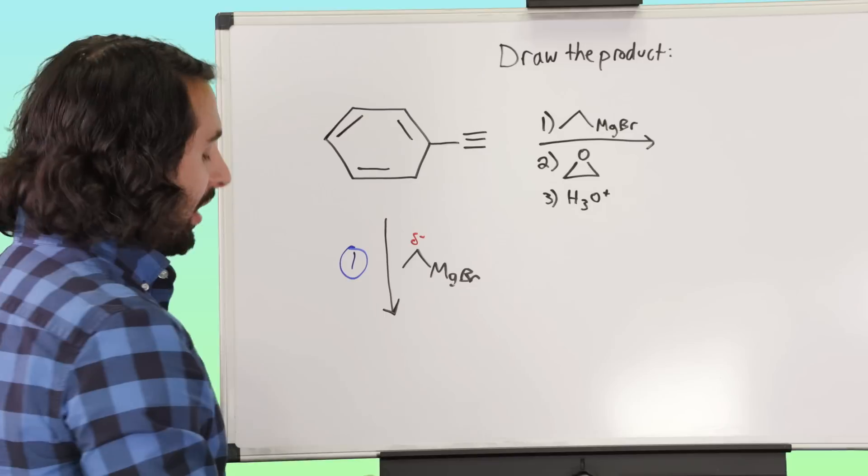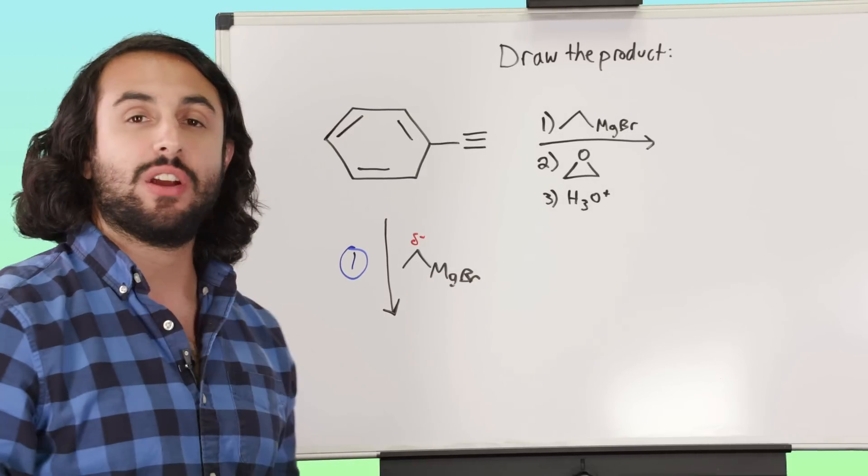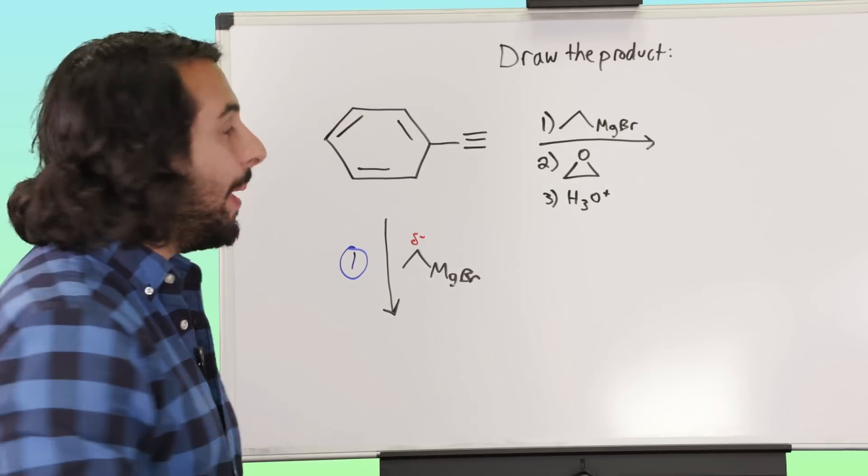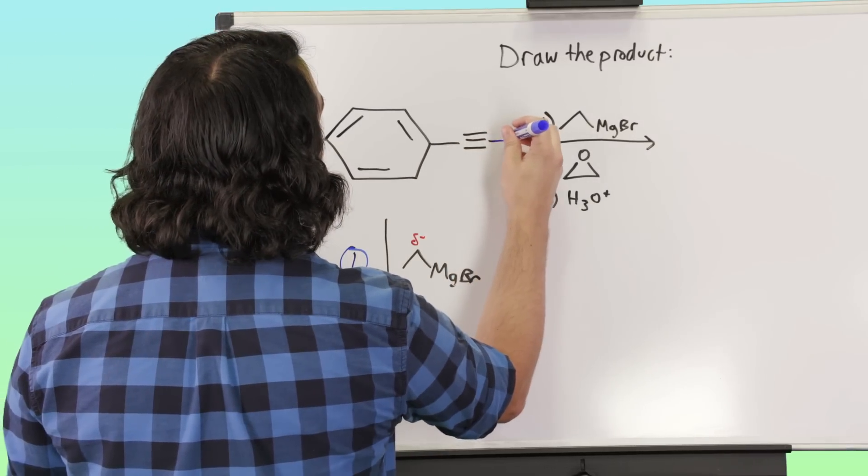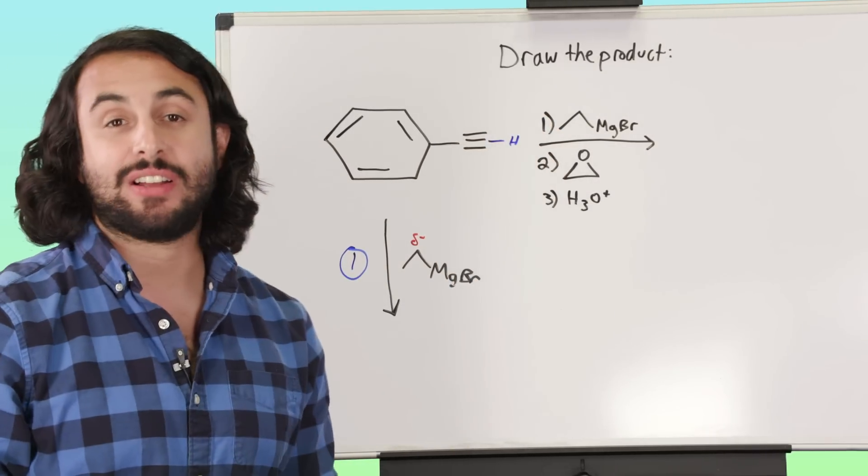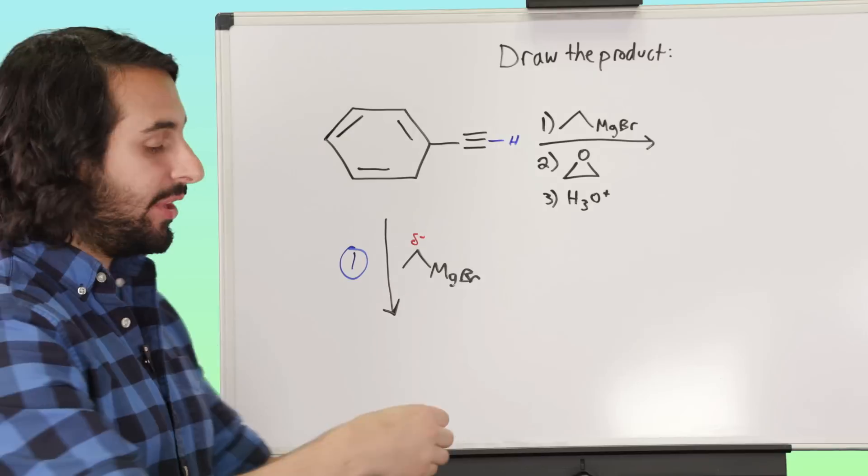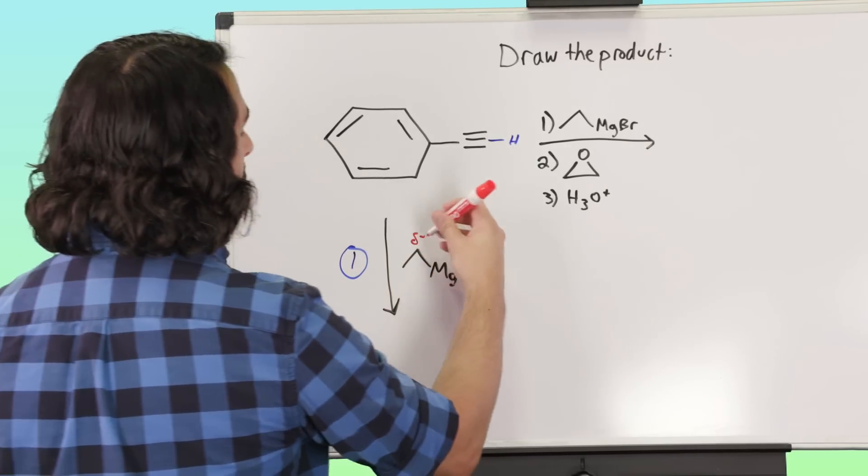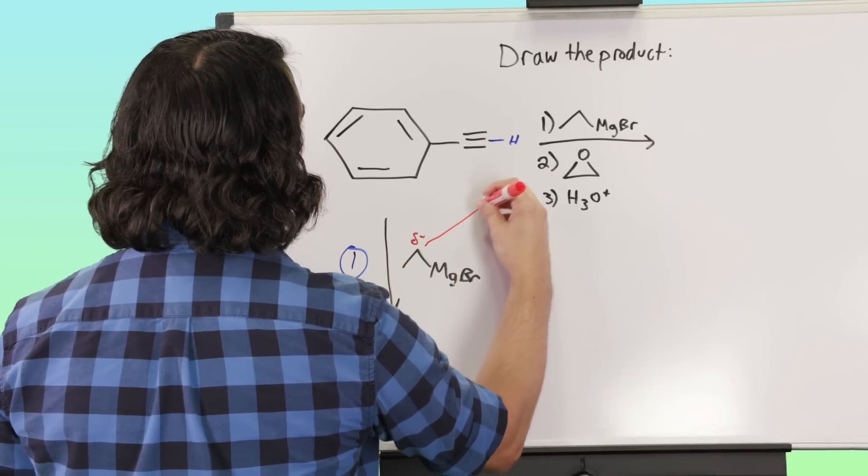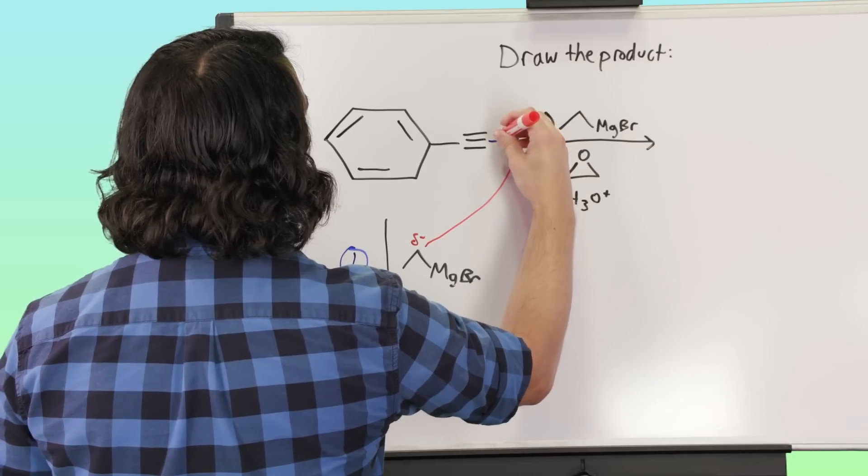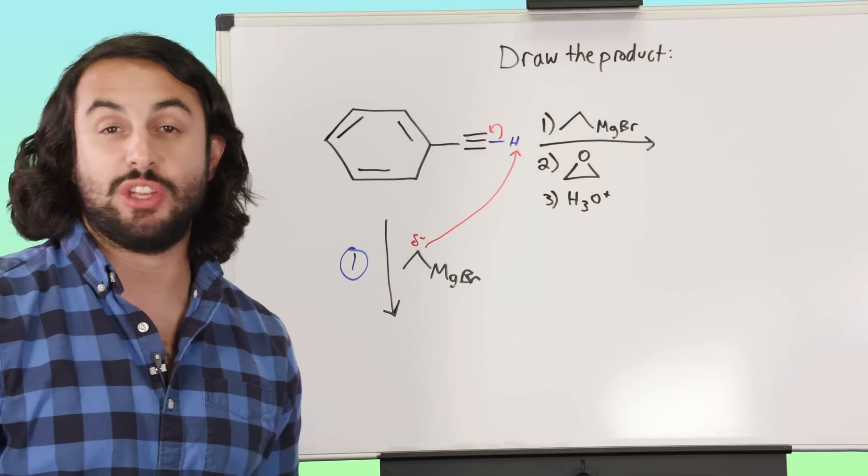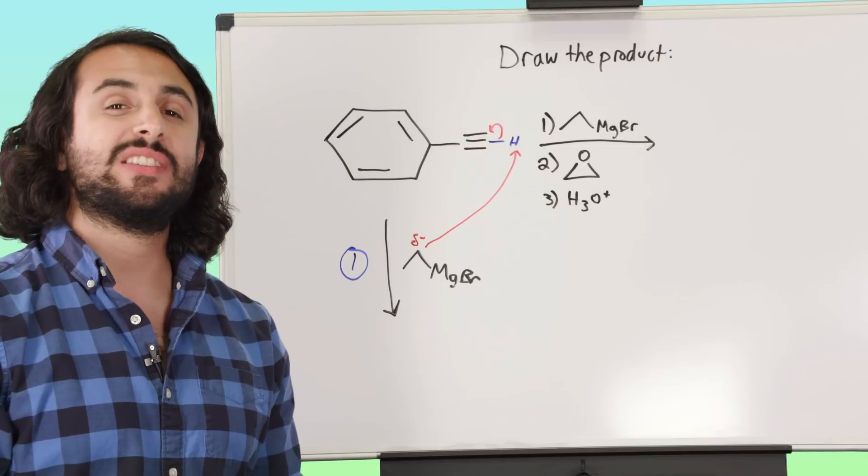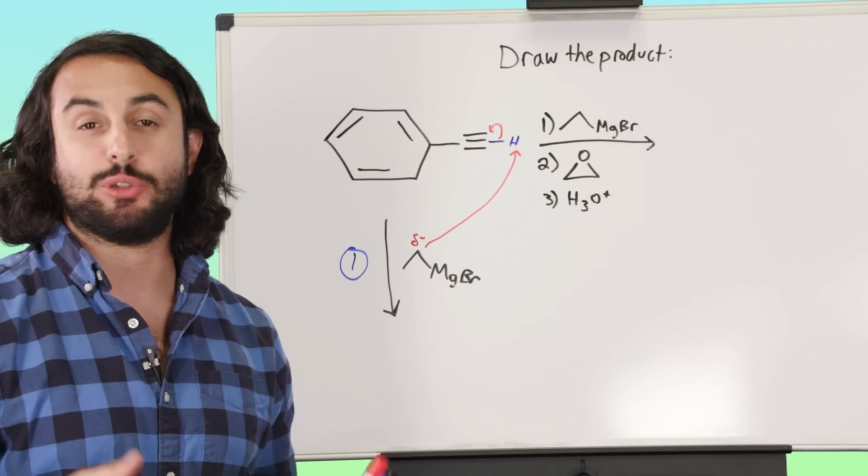Now we don't have any protons on here that are as acidic as water's protons, but we do have this alkynal proton, and as it happens that alkynal proton actually is acidic enough to do acid-base with this Grignard reagent. So even though this isn't the typical thing that you see a Grignard reagent doing, this is a sort of critical thinking that we have to be able to employ.